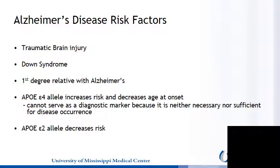Risk factors for Alzheimer's disease include traumatic brain injury, Down syndrome, and having a first-degree relative with Alzheimer's. The Apolipoprotein E4 allele increases risk and also decreases the age of onset for Alzheimer's disease. However, the APOE E4 allele cannot serve as a diagnostic marker because it is neither necessary nor sufficient for disease occurrence. The APOE E2 allele decreases risk of Alzheimer's.